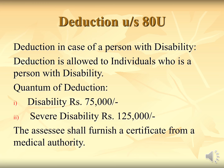The last section is deduction under section 80 U. Under section 80 U, a deduction is given to a person who is a person with disability. In case of disability, a deduction of rupees 75,000 is allowed, but in case of severe disability, a deduction of rupees 1,25,000 will be allowed. The condition is that the assessee will have to furnish a certificate issued by a medical authority, only then this deduction will be allowed.